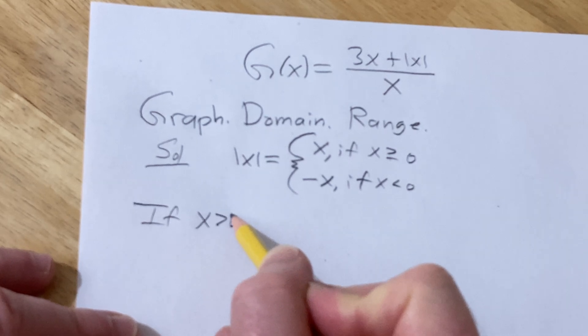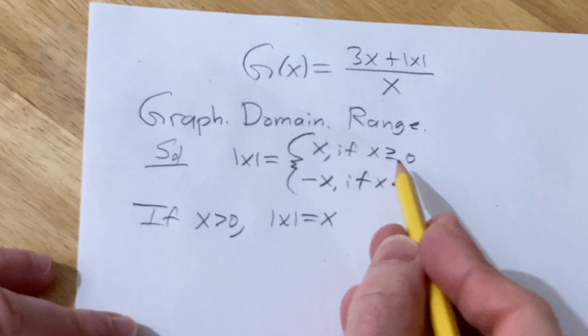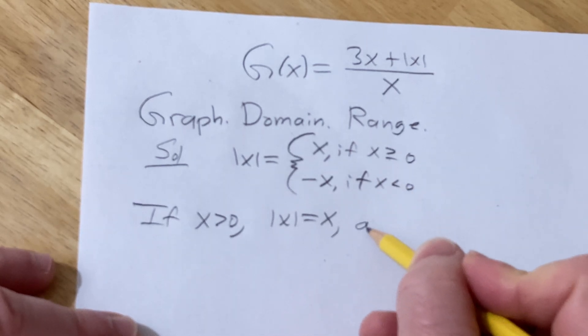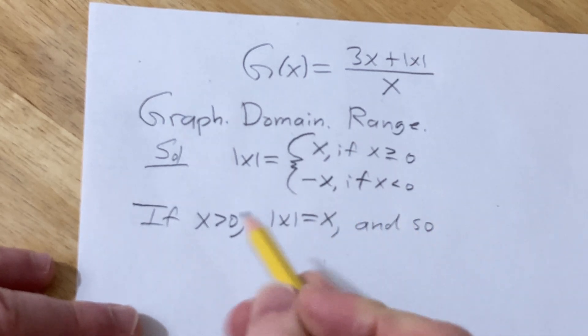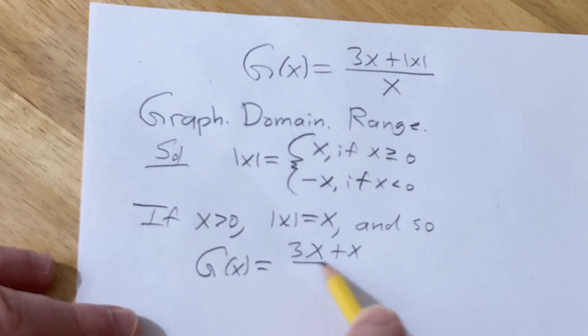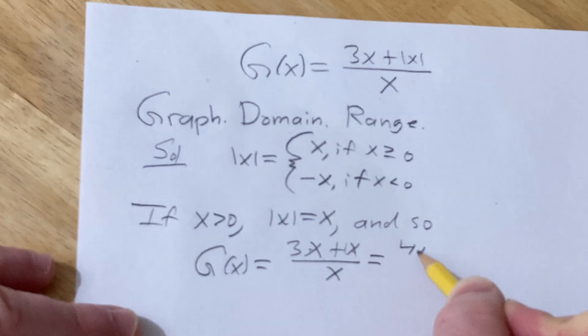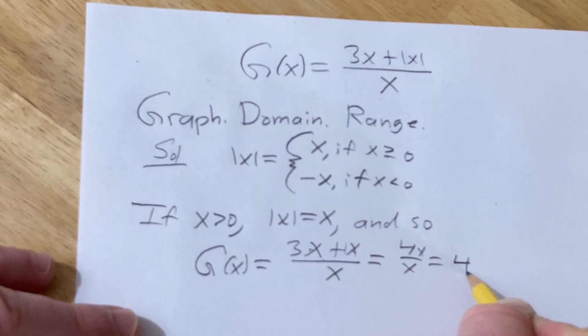If x is greater than 0, then the absolute value of x equals x, and so G(x) would be 3x plus x over x. 3x plus x is 4x, so you get 4x over x, which is 4.